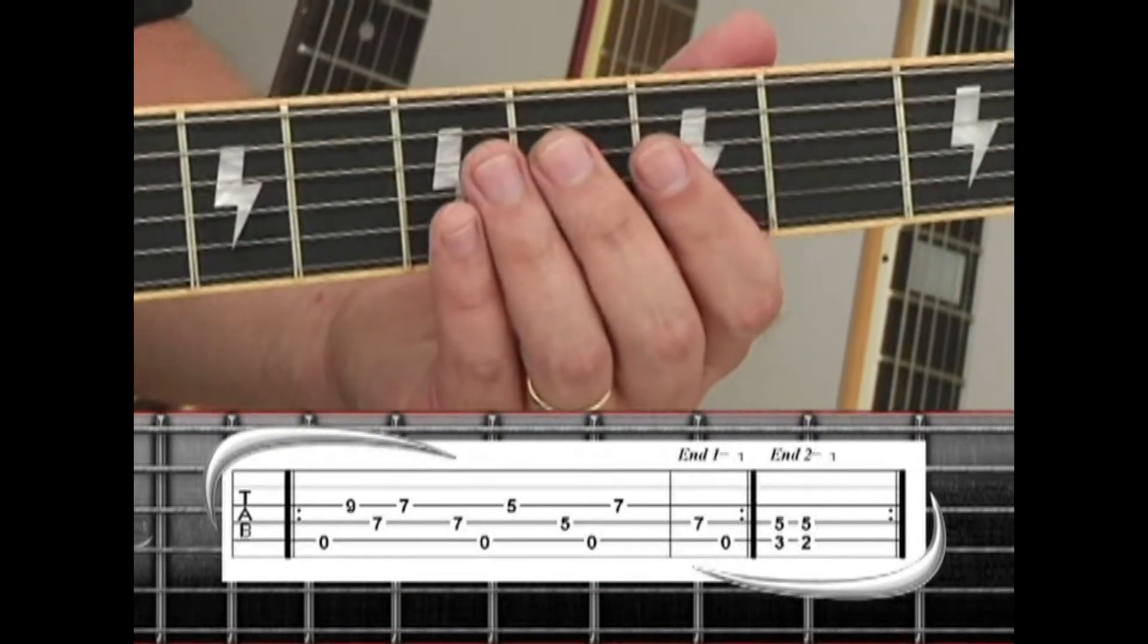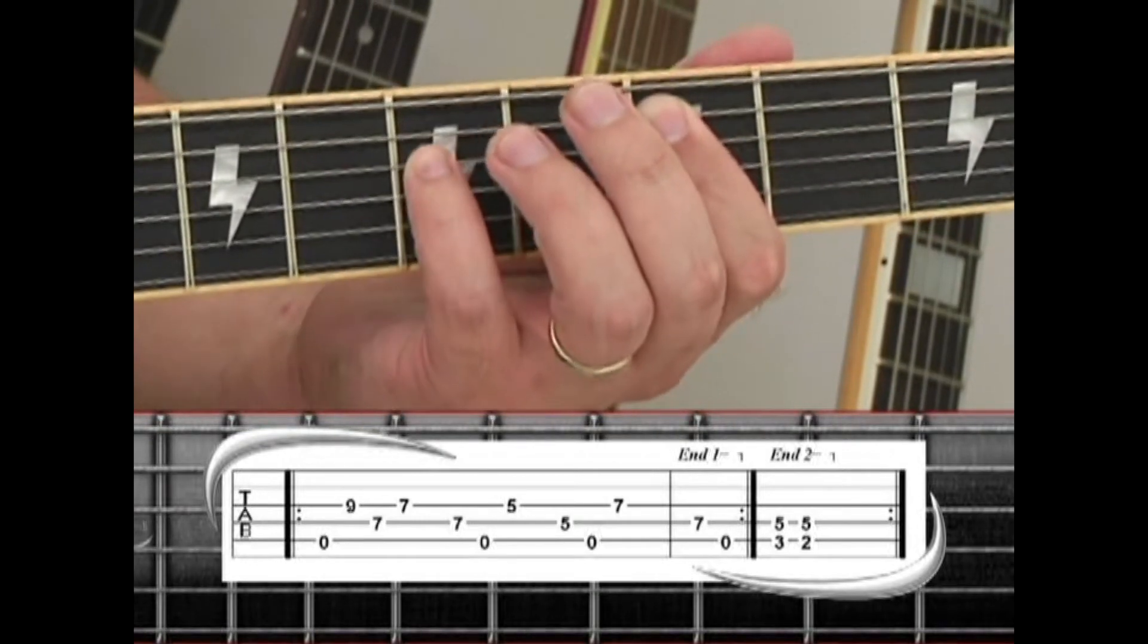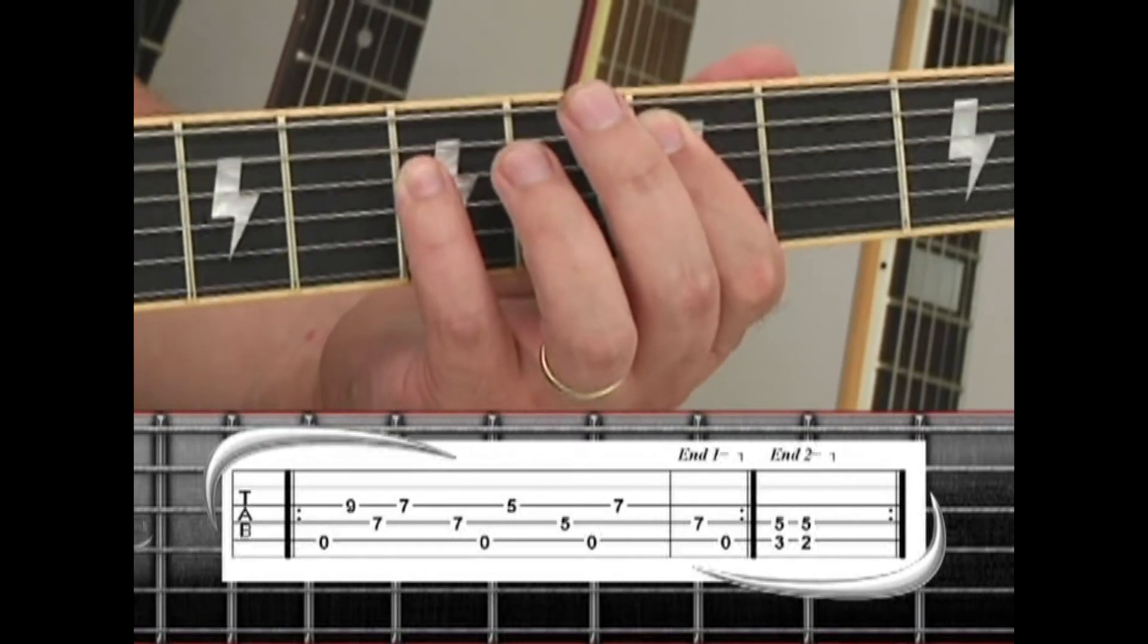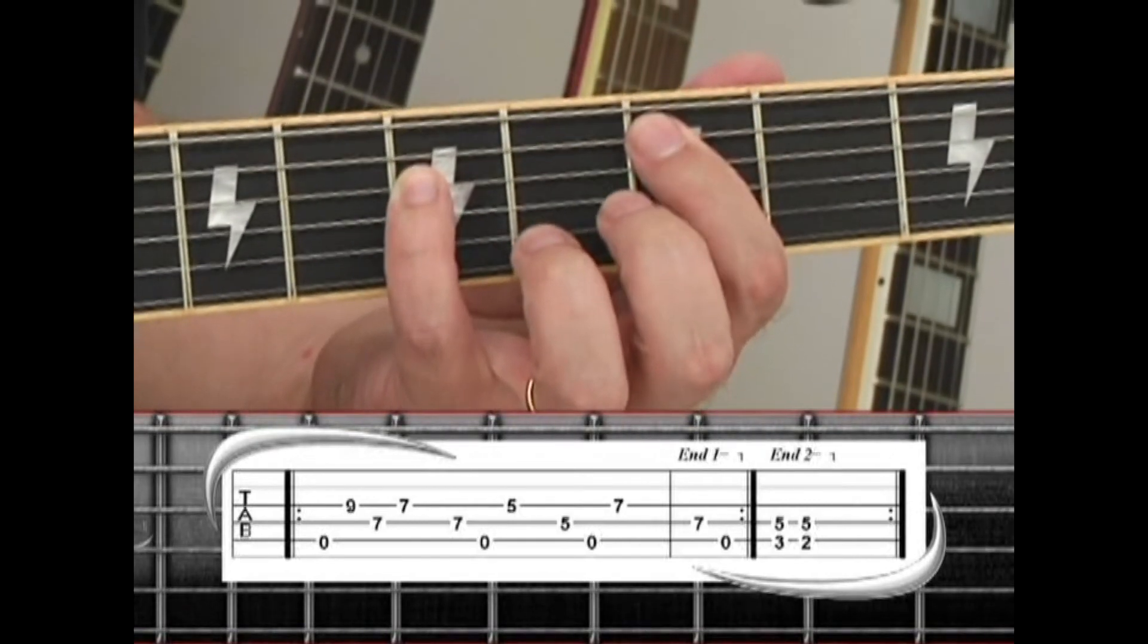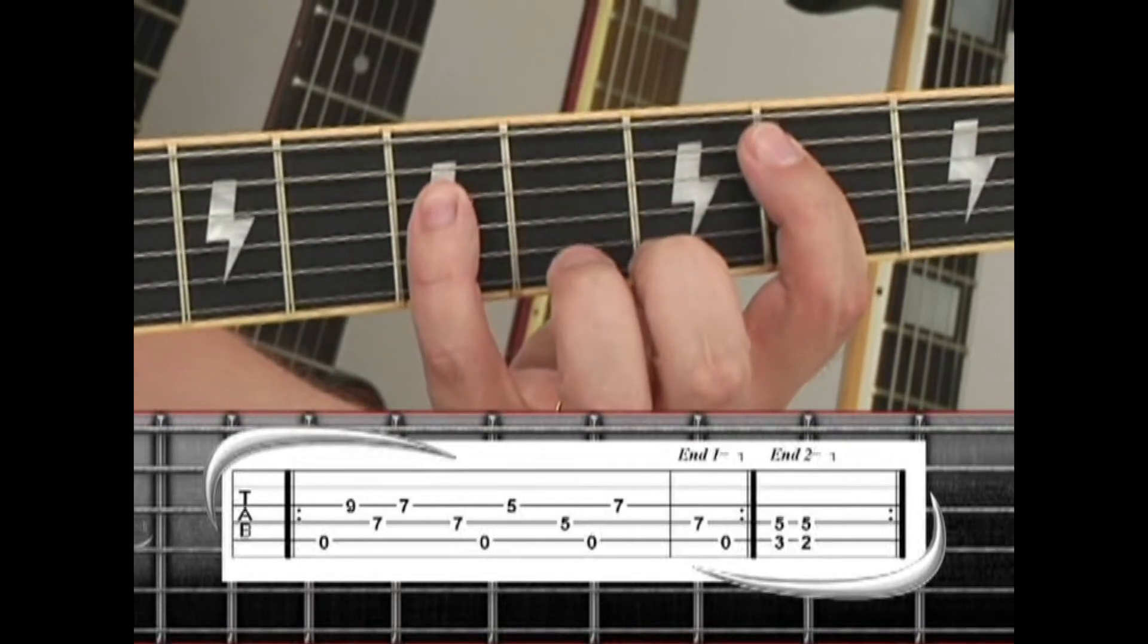Fifth string third fret, along with the fourth string fifth fret. Strum, then drop your index finger down to the fifth string second fret, while keeping your ring or pinky on the fourth string five.